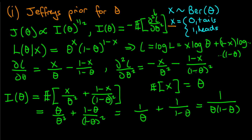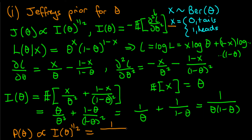Note that to combine those terms I cross-multiplied and added — I've worked that out off-screen. So the Jeffreys prior is proportional to I(theta) to the power of a half, which equals one over theta(one minus theta) to the power of a half.